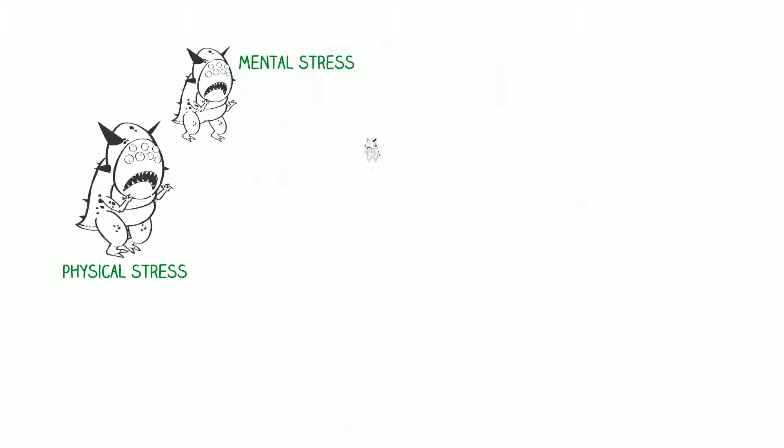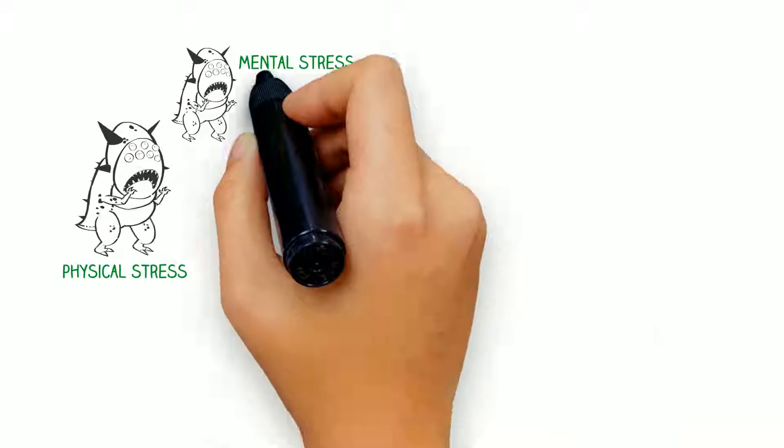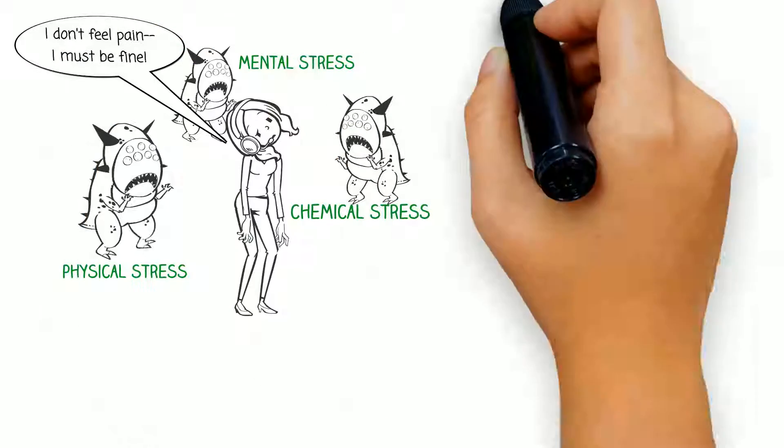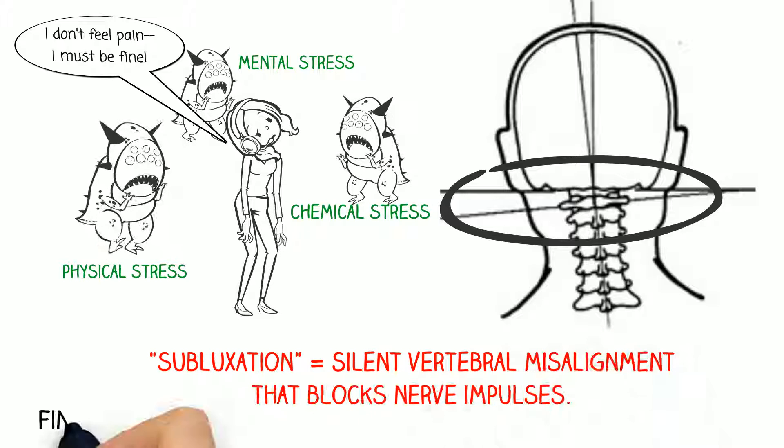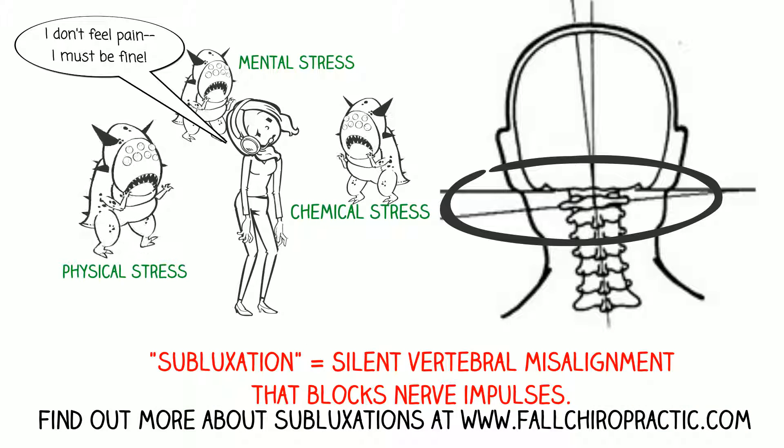However, with a combination of modern chemical, mental, and physical stresses, one of the 24 spinal bones can become subluxated or misaligned. Then nerve impulses are choked off and the body and brain are silently robbed of health and healing messages and feedback.